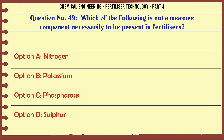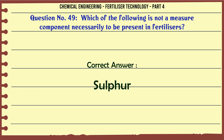Which of the following is not a major component necessarily present in fertilizers? a. nitrogen, b. potassium, c. phosphorus, d. sulfur. The correct answer is: sulfur.